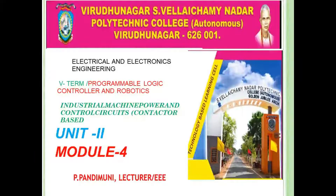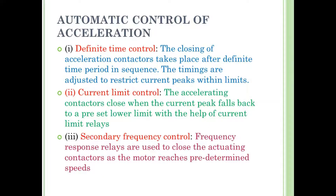We need to model 4. It is a starter for slip ring induction motor. The starter uses automatic controller acceleration. There are one of three types: Definitive Time Controller, Current Limit Controller, and Secondary Frequency Acceleration Controller.